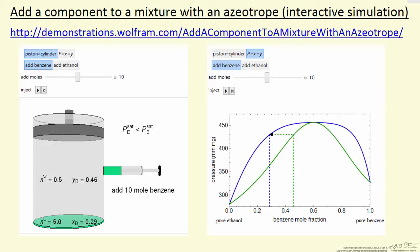And we add benzene, then we expect of course this black dot to move to the right. If we add more benzene of course it moves further to the right.